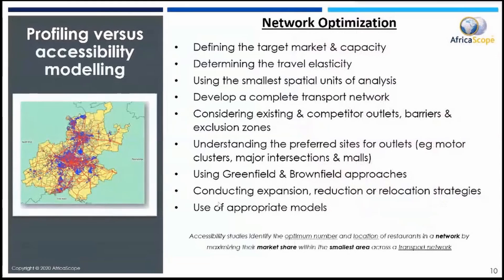If we look at what we call network optimization, it's a much more holistic approach. First of all, there is the defining of the target market and how many people in that target market you need in order for that entity to be financially viable. You've also got to then take into consideration the travel time — how far are people willing to travel in order to get access to that retail outlet? And in some instances, what is the elasticity of travel — in other words, how far are people willing to travel before they say that is too far?